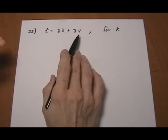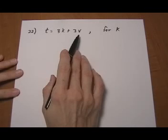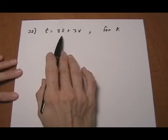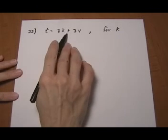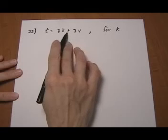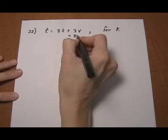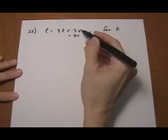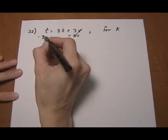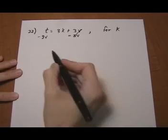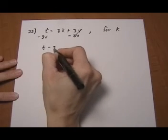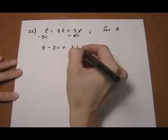Just like regular solving linear equations, always start with the adding and subtracting first. And then move to the multiplying and dividing. So the first thing we want to do is the opposite operation of the addition here. We want to subtract the 3V. That's going to make it cancel out on the right side. Balance it out on the left. So we have T take away 3V equals 3K.